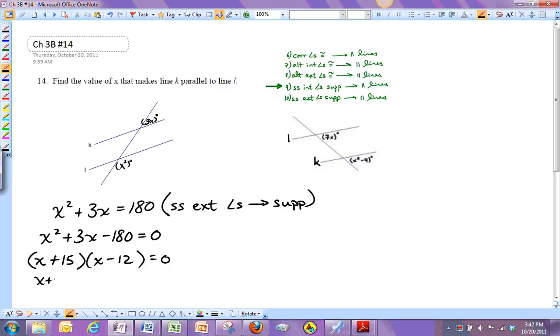So that means X plus 15 is zero, or X minus 12 is zero. And so then that means X is negative 15, or X is 12.